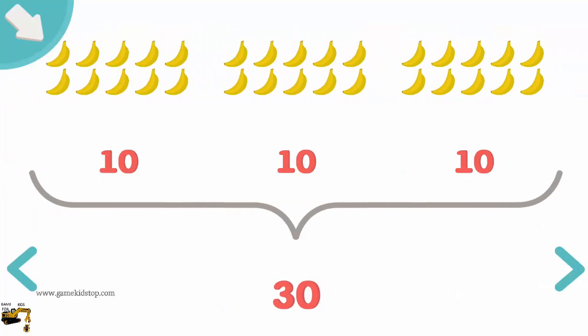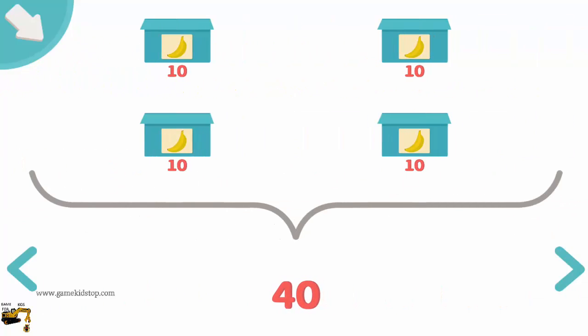This is the number 30. The number 30 is made up of two digits. The first digit shows the number of 10s and the second digit the number of units. In the number 40 there are four 10s. The number 40 is made up of two digits. The first digit shows the number of 10s and the second digit the number of units. So 4 times 10 is 40.